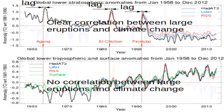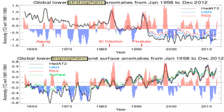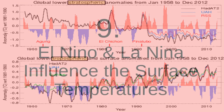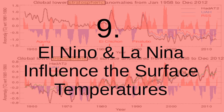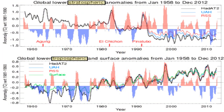I overlaid two different graphs — the temperature graphs and the graphs of El Niño and La Niña. When I overlay the El Niño and La Niña graph over the stratospheric temperatures, there is not a clear correlation. But there is a clear correlation between El Niño and La Niña and the temperatures on ground level — they clearly follow each other. There are sometimes little trend breaks, but this could be caused by solar activity.